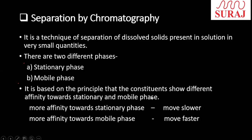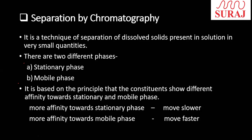Chromatography is based on the principle that the constituents show different affinities towards the stationary phase and the mobile phase. Components with more affinity for the stationary phase (paper) move slowly, while components with more affinity for the mobile phase (solvent) move faster. This difference in movement causes separation — that is the basic principle of chromatography.